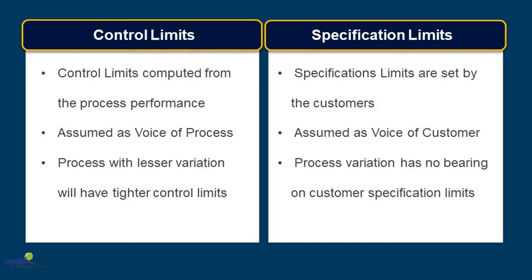On the contrary, a control limit is computed from the performance of the process. It has nothing to do with the customers. So you can assume that control limits is voice of the process. If the process has lesser variation, then you would have tighter control limits and if the process has more variation, then the control limits would be naturally broader.